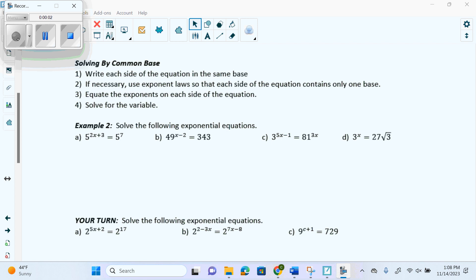We have to solve by common base, which says write each side of the equation in the same base. So when you have a base and then you have an exponent, the number that's lower to the exponent is called the base, right? There's the base, there's the exponent.